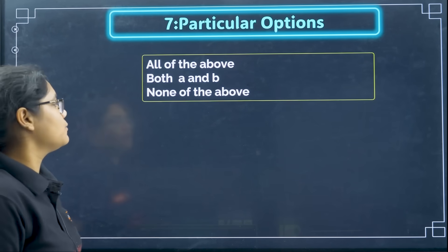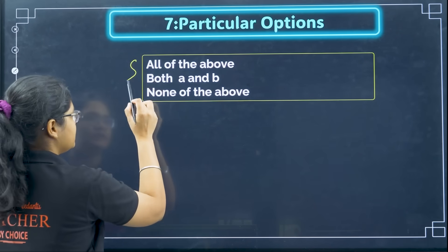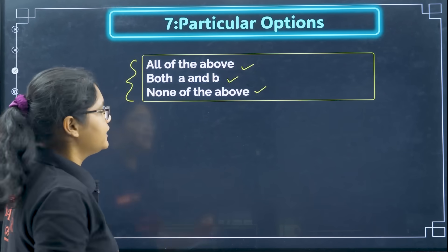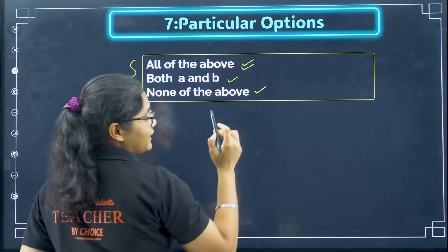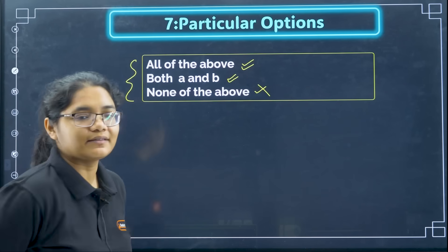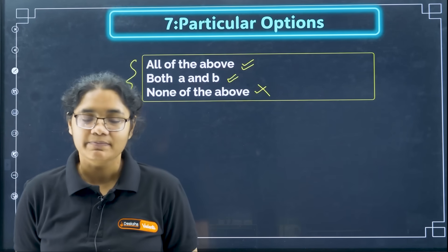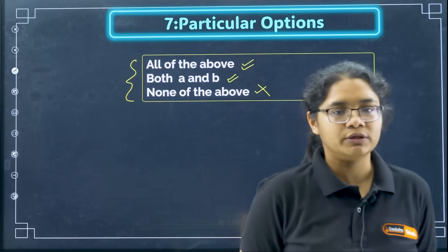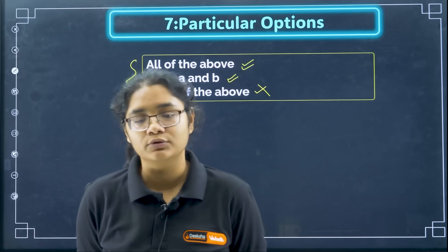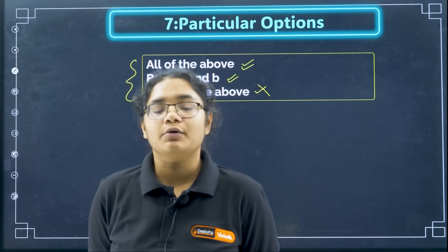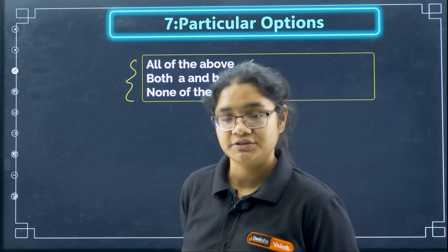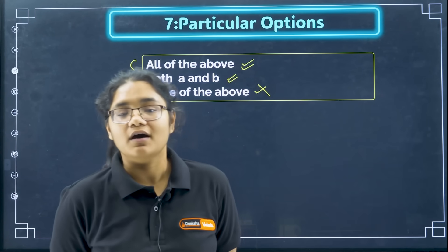Next if I see particular options, so basically if we have these options in the question: all of the above, both a and b and none of the above. So generally if all of the above is there we will find that as the answer, if both a and b is there that can be the answer, if none of the above is there that will not be the answer in most of the cases. So if there is a question where you find an option is given both a and b, then if you don't know anything about that question then do go and select both a and b. If you find a question where a b c is there and option number d is all the above and you don't have any idea about that question, then please select all the above.